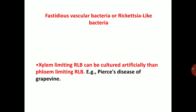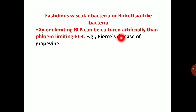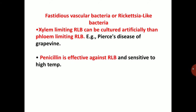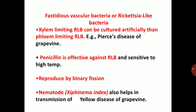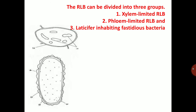Fastidious vascular bacteria are rickettsia-like bacteria. Xylem-limiting RLB can be cultured artificially more easily than phloem-limiting RLB. Example: Pierce's disease of grapevine, caused by xylem-limiting RLB. Penicillin is effective against RLB and they are sensitive to high temperature. They reproduce by binary fission. Nematode Xiphinema index also helps in transmission of yellow disease of grapevine.